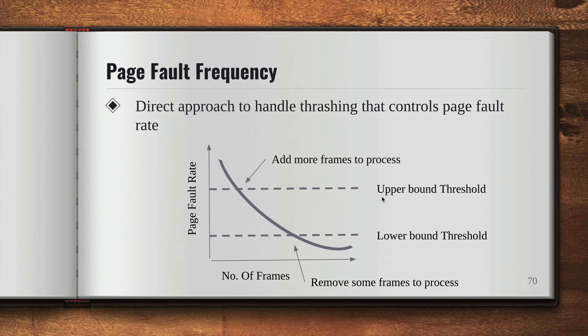But if the page fault rate is above the upper bound threshold, which is up here, then more frames will be added to the process to avoid thrashing. That is basically the page fault frequency method of solving thrashing.